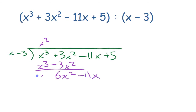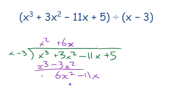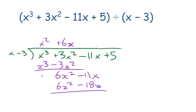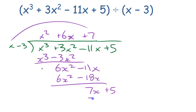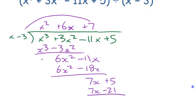Bring down minus 11x. x into 6x squared goes plus 6x times; multiply back to get 6x squared minus 18x. Subtract — negative 11 minus negative 18 is plus 18 — giving you 7x. Bring down the last term. x into 7x is plus 7; multiply back 7x minus 21. Subtract: 5 minus negative 21 is plus 26. That's your remainder, and your quotient is up there.